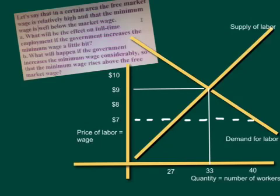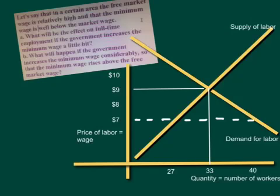As you can see, the equilibrium wage — the free market wage — is at $9. It's at the intersection of the two yellow curves. And it looks like about 33 million people are being hired at that $9 free market wage. This is in an area where the cost of living is relatively high — let's say New York or Los Angeles.